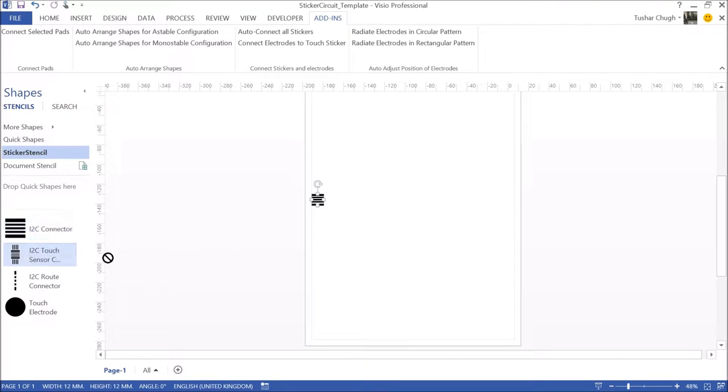Here is another design being created in Visio. It's a prototype touch sensor with eight electrodes and our Visio extensions make it pretty easy to wire up.